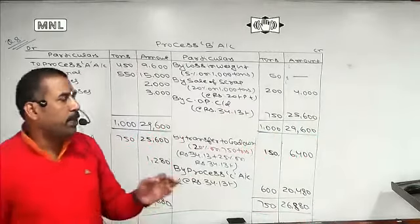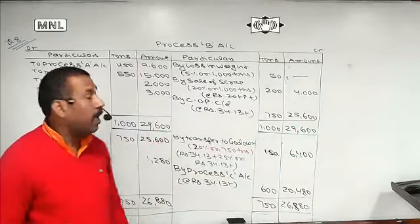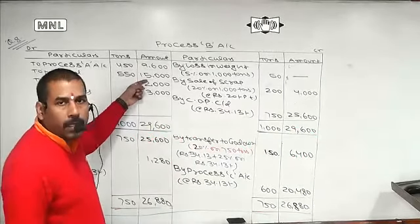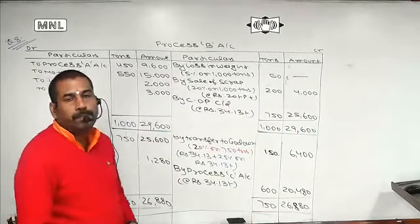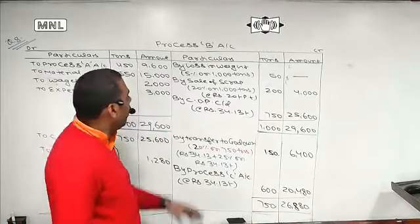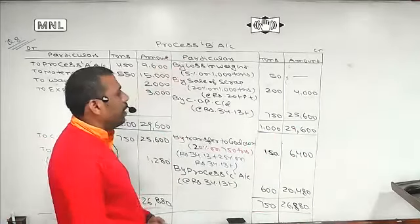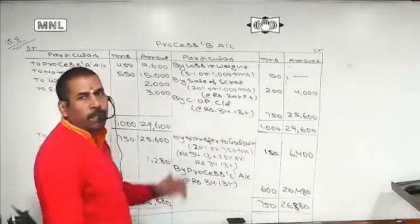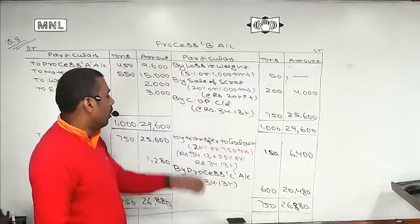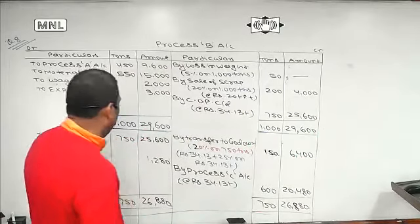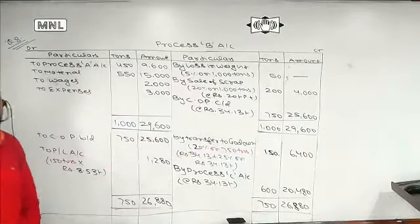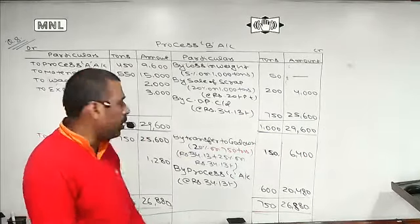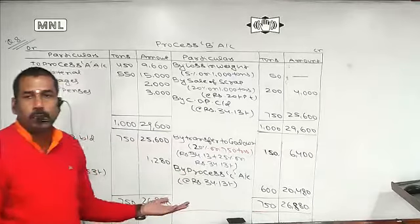Now we have added cost to the cost make-up. Process A — cost of production, C by D, B by D. 20% is transferred to the godown, and the remaining 80% is transferred automatically in the process to the next process. The same basic calculation procedure applies as done previously.